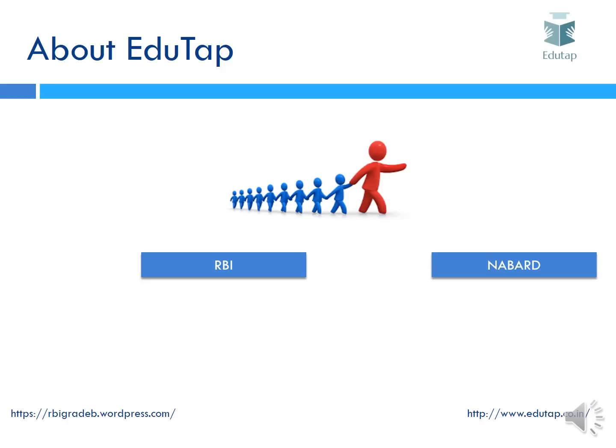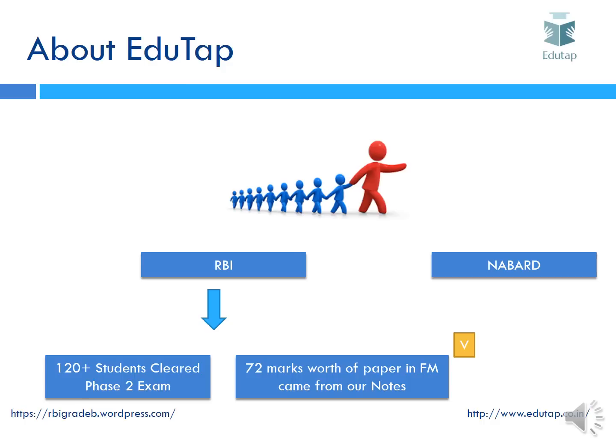A little bit about EduTap: EduTap is the leader in RBI Grade B, Grade A and Grade B exams. We have produced some good results last year — 120 plus students cleared the phase two exam held in 2017, that is on 7th July 2017. We are happy to say that 72 marks worth of paper in FM came from our notes, and there is a video available on our YouTube channel on the finance and management part analysis, discussing each question along with its options and where in our notes that portion was given. We are not simply exaggerating; we will give you proper evidence of how our notes were helpful in the FM paper for 2017.